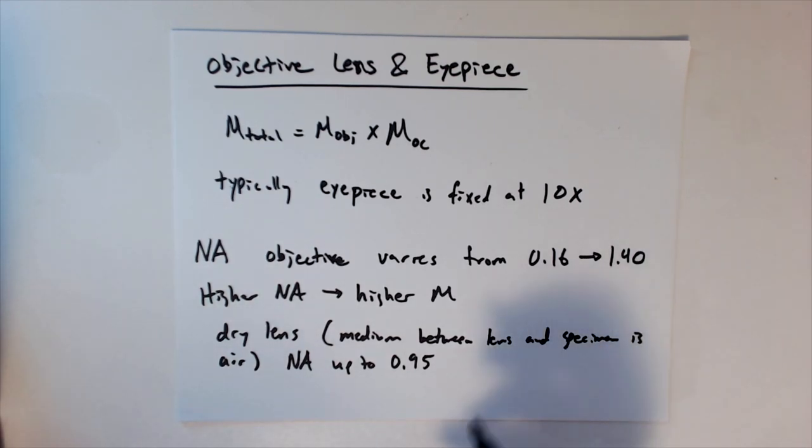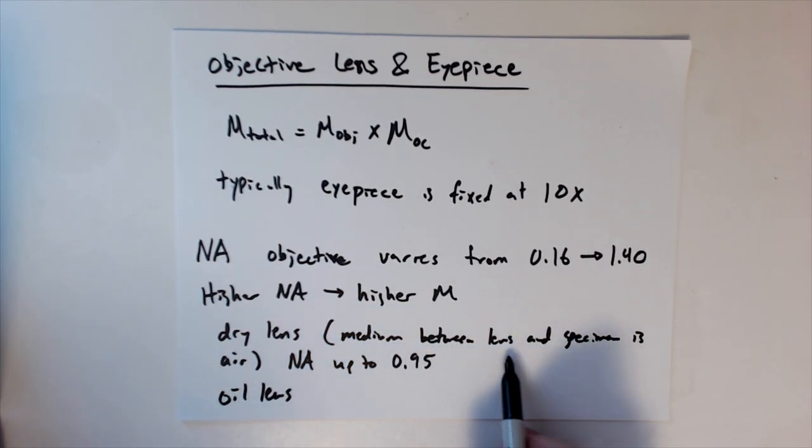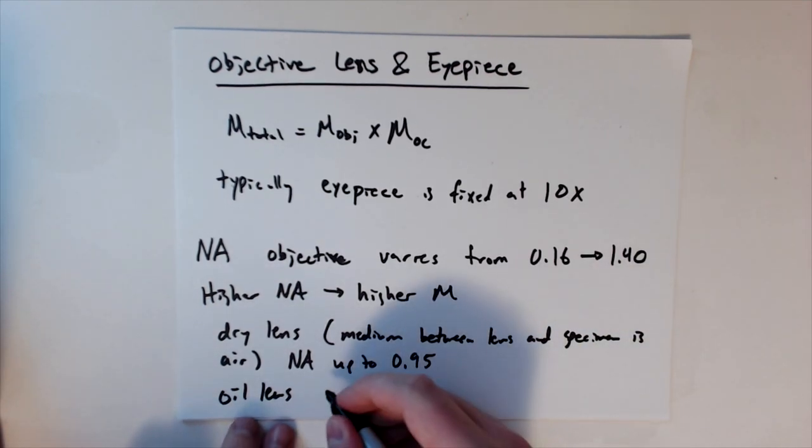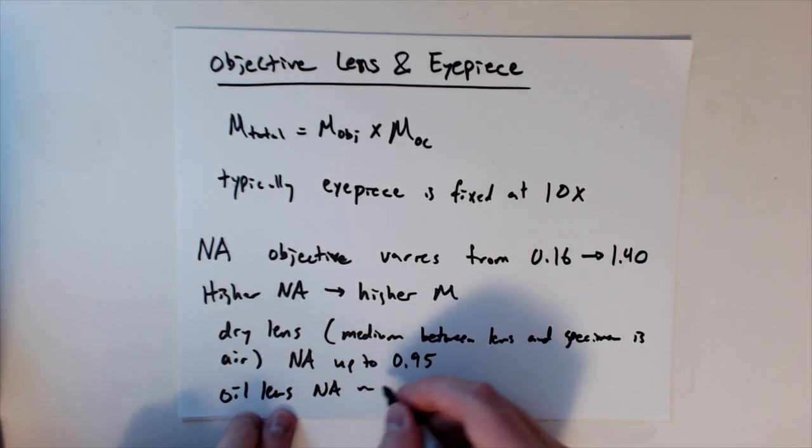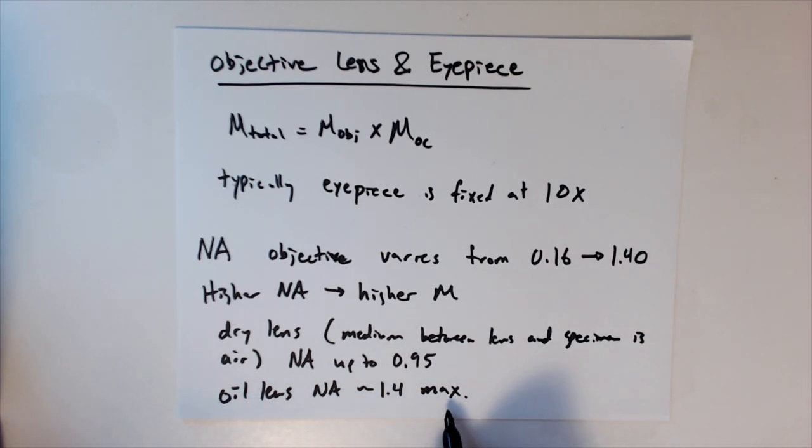So that means that if we use oil lens, so that's where we have oil between the lens and the specimen, then we can get an NA of up to 1.4 max. So that's the upper maximum. I mentioned this before, but objectives are a barrel, and they have a series of lenses within them. In the best cases, we have oil, and then air only gets us up so far in terms of the numerical aperture.